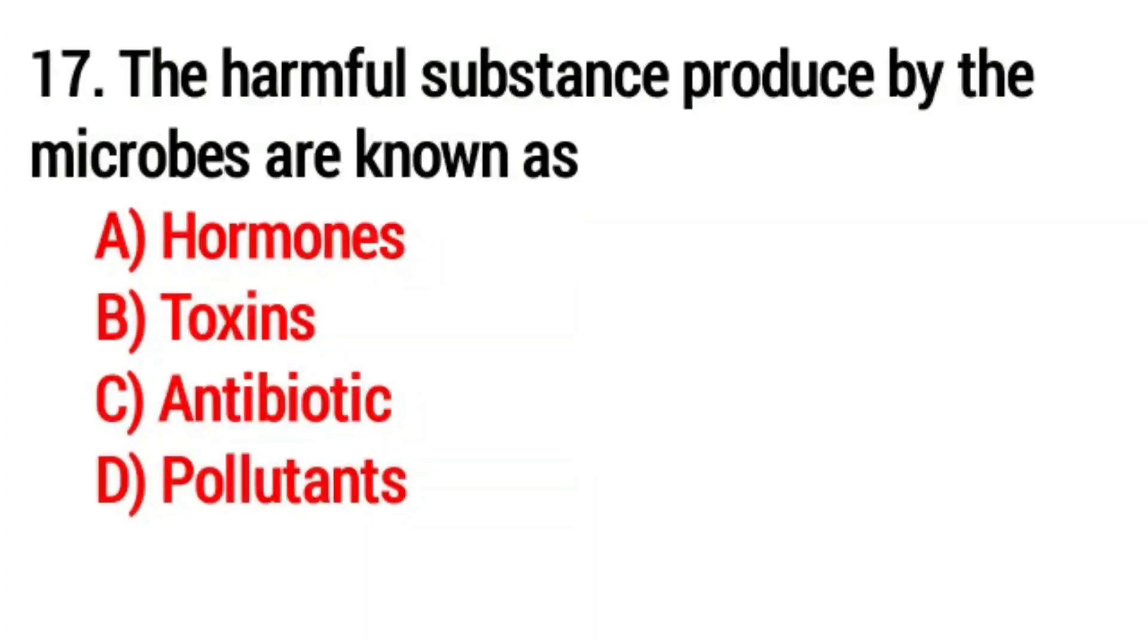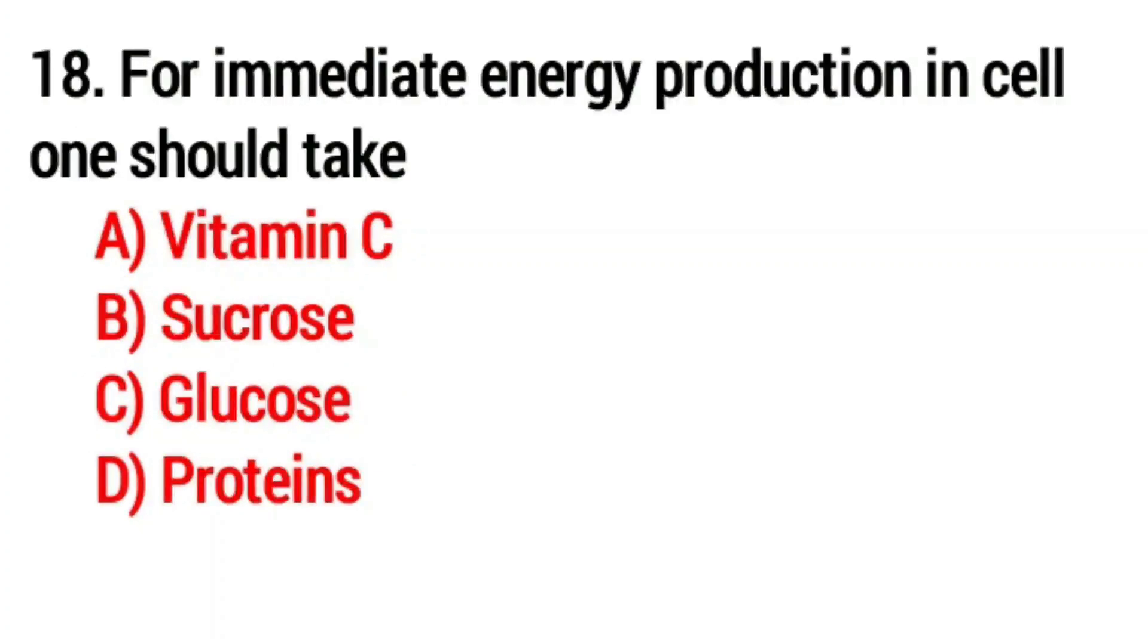Question number seventeen: The harmful substances produced by the microbes are known as? Answer: option B, toxins. Question number eighteen: For immediate energy production in cell one should take? Answer: option C, glucose.